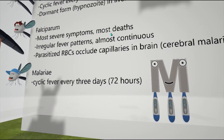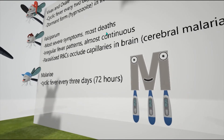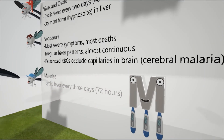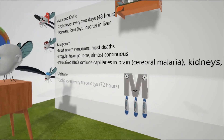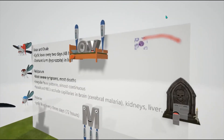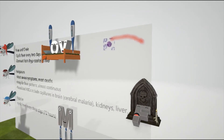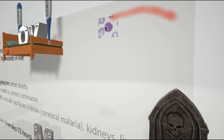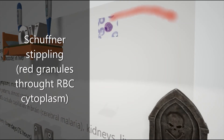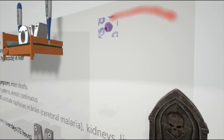Then we have the malariae form, which causes a cyclic fever every three days — that's why there are three thermometers under the M. Diagnosis for malaria is made through a blood smear. This blood smear shown here specifically refers to the findings seen with vivax and ovale, because there will be red granules known as Schüffner's stippling throughout the red blood cell cytoplasm. In general, they look for a trophozoite ring form within the red blood cell, or a schizont containing merozoites.